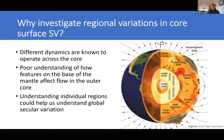Now we've got these global models — why do we want to investigate regional variations in core surface secular variation? Different dynamics are known to operate across the core. Outside the tangent cylinder — the area above and below the inner core — we have these roles of Taylor column fluid moving up and down the core. We want to know whether the dynamics inside the tangent cylinder differ from those outside, and whether we can see that in our measurements. We also want to know how features at the base of the mantle, such as the LLVPs that John was just talking about, affect flow in the core, and hopefully improve magnetic field forecasting.